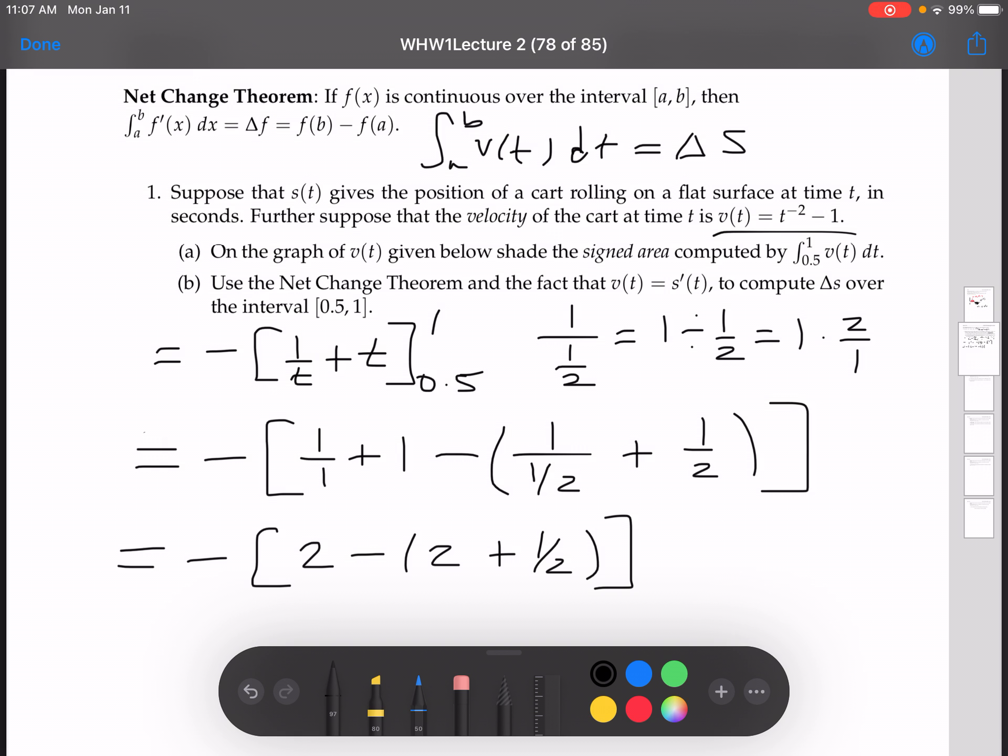Alright, now distributing that negative in, at the end we got 2 minus 2 minus a half, so those will cancel. We got negative a half, which is a half. So that is the answer for B, the change in S is equal to a half.